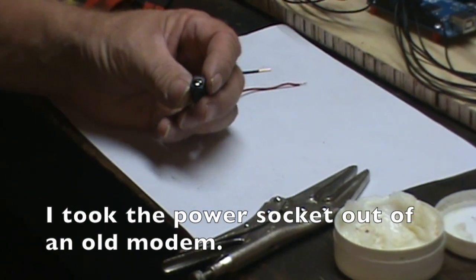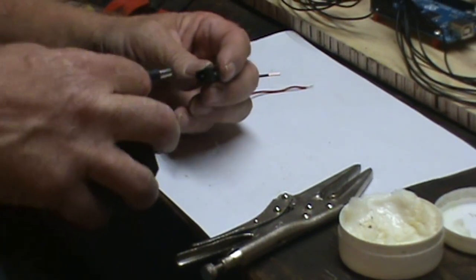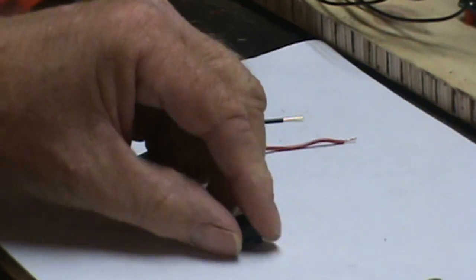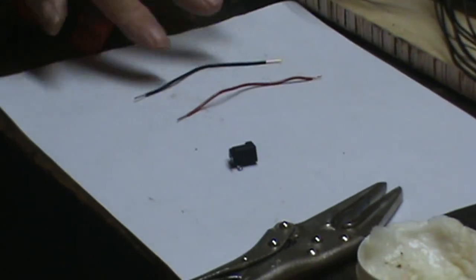Now this socket right here is so that I can connect my 5 volt DC transformer, so I'm going to add a couple of wires to it, a red one and a black one.